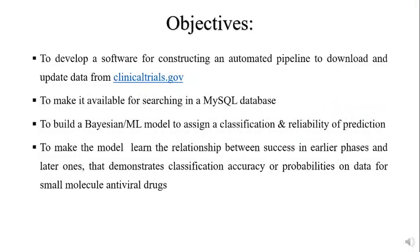Objective 1: To develop software for constructing an automated pipeline to download and update data from clinicaltrials.gov. This tool may be tunable such that all types of clinical data can be accessed. The data link provided is only an example; participants may use any validated clinical data source.